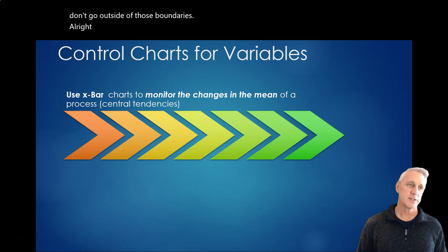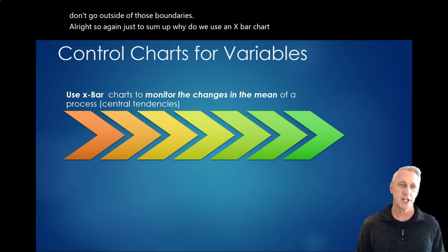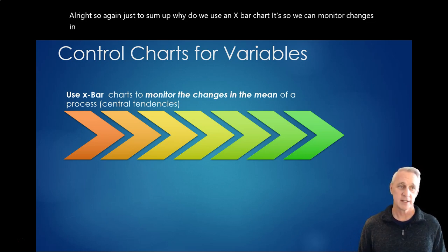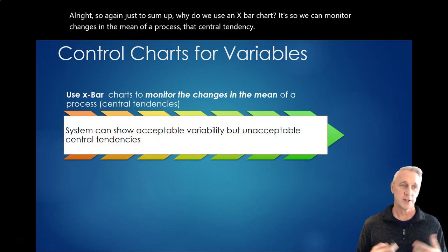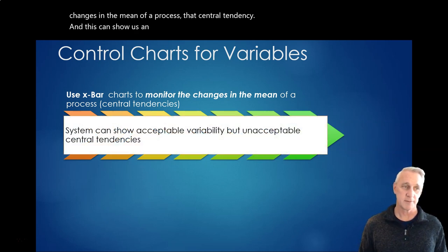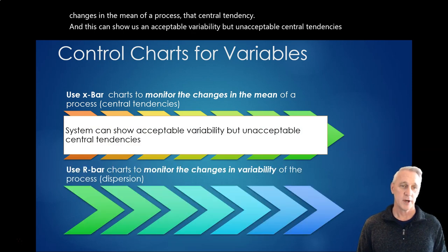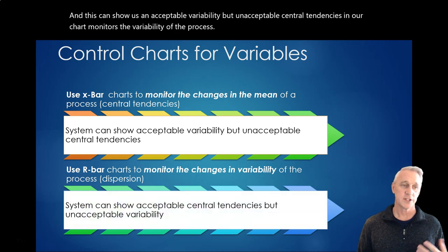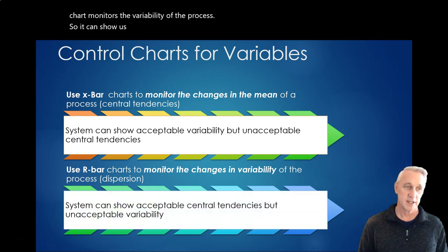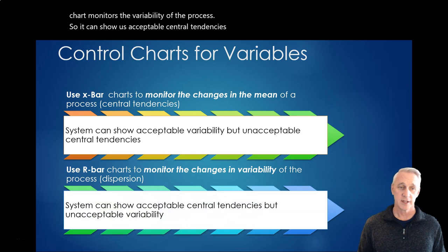So, again, just to sum up, why do we use an X bar chart? It's so we can monitor changes in the mean of a process, that central tendency, and this can show us an acceptable variability but unacceptable central tendencies. And R chart monitors the variability of the process, so it can show us acceptable central tendencies but unacceptable variability. In other words, maybe the system's getting too variable, too wide.